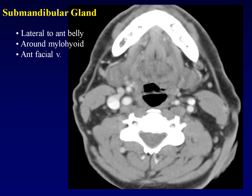The submandibular glands lie lateral to the anterior bellies of the digastric muscles, and a small amount of the submandibular gland loops up around the back of the mylohyoid muscle. The mylohyoid muscle has a free posterior edge — nothing anchors its back. So although most of the submandibular gland lives in the neck in the submandibular triangle, a small lip comes up and around the back of the mylohyoid and is actually in the floor of the mouth.